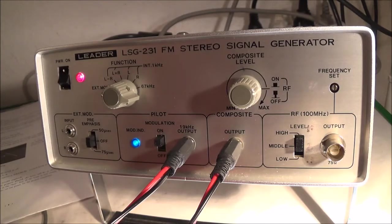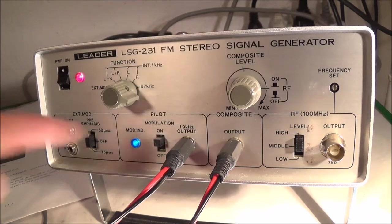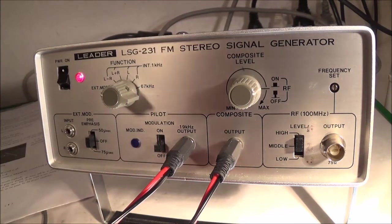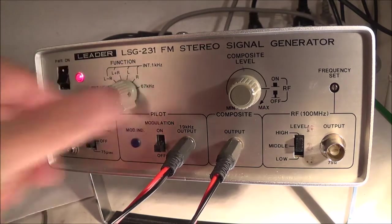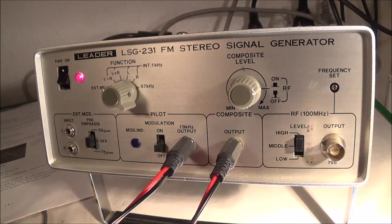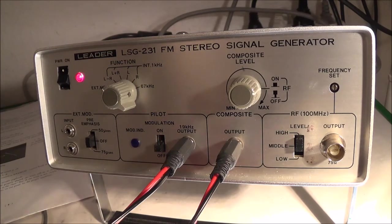So next we do what is called a subcarrier pilot phasing and we switch the pilot modulation switch to off and the function switch to L-R. And of course we have to play around with our controls again, which I have just did by adjusting the vertical gain.